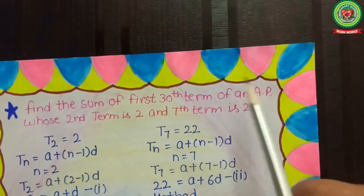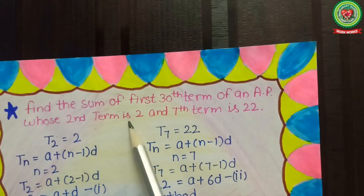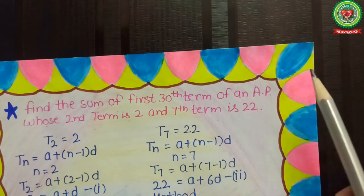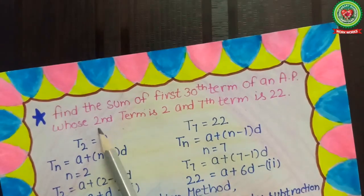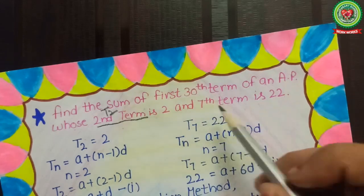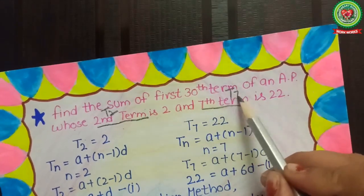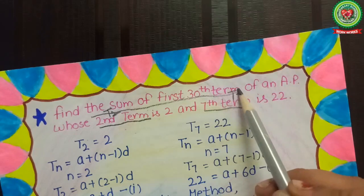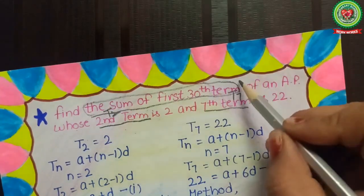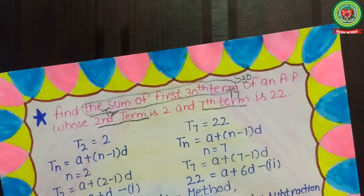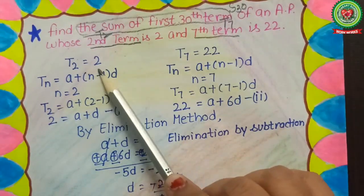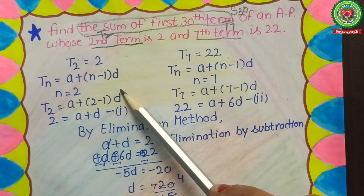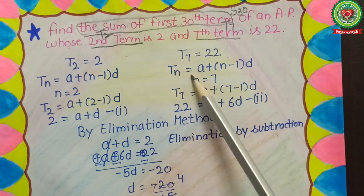Now one more sum: find the sum of the first 30 terms of an AP whose second term is 2 and seventh term is 22. In this statement we don't have a series; we are given t2 = 2 and t7 = 22. We need to find S30. Applying the general term formula Tn = a + (n−1) × d, we substitute n = 2 on one side and n = 7 on the other side.